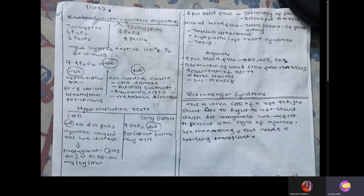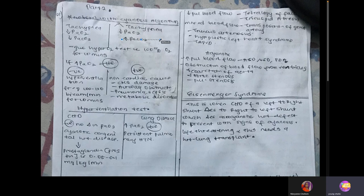Question 21 covers the diagnostic algorithm for a newborn baby with cyanosis. If the child has a decreased partial pressure of oxygen but the partial pressure of carbon dioxide is high, or if both oxygen and carbon dioxide are decreased — in both cases, you have tachypnea with decreased PO2 and PCO2, or decreased PO2 but increased PCO2.